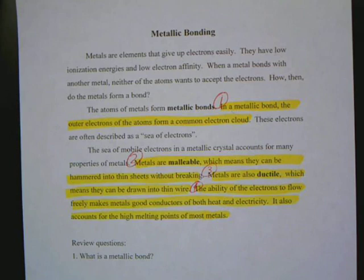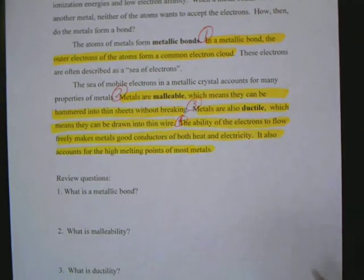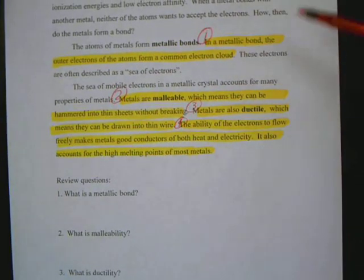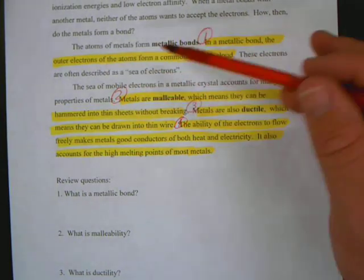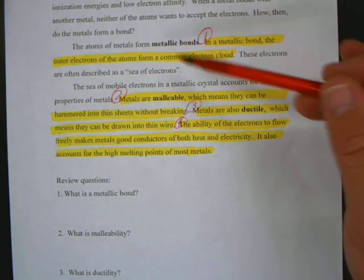Last worksheet is metallic bonding. First question was, what is a metallic bond? If you're looking at second paragraph, second sentence, it says in a metallic bond, the outer electrons form a common electron cloud. That's all you need.